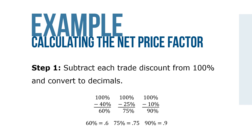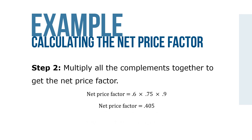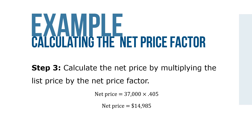Step 1: subtract each trade discount from 100% and convert to decimals. Step 2: multiply all the complements together to get the net price factor. The net price factor equals .6 times .75 times .9, for a net price factor totaling .405. Step 3: calculate the net price by multiplying the list price by the net price factor. In this case, $37,000 times .405, making the net price $14,985.